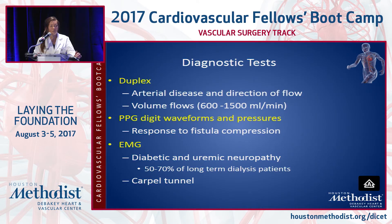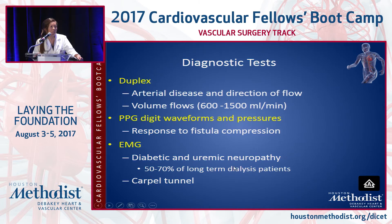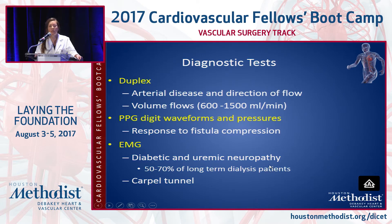The tests you want if they present with steel, having done all the preventative measures: get a duplex of your fistula or graft. Make sure volume flows are not high — over two liters I would consider high. Look at the arteries and direction of flow; if they have retrograde flow on duplex of their brachial or radial, that tells you it really is stealing. Then a steel study, which consists of PPG digit waveforms and pressures, showing how waveforms respond when you compress the fistula. I also get an EMG because many have carpal tunnel syndrome worsened with dialysis — 50 to 70 percent of patients on long-term dialysis will have some sort of neuropathy in their hands.